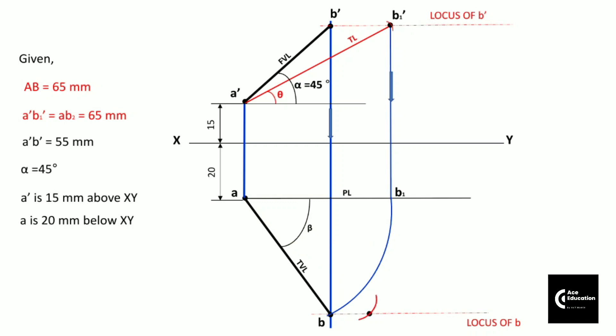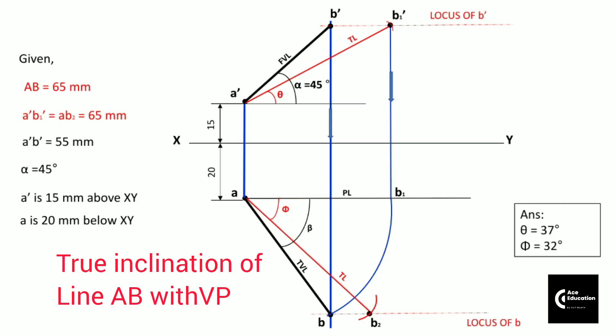You get line AB₂. This is the true length in top view. And this makes angle phi with XY line.